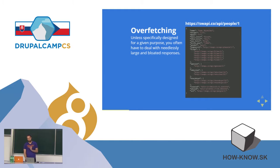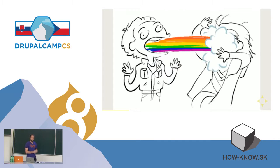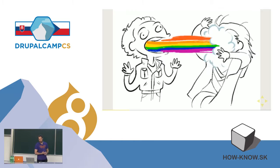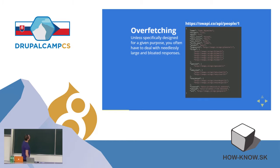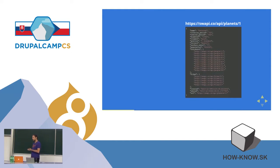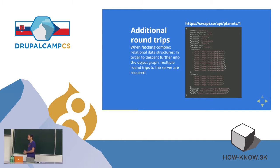We were only interested in a few fields on that request but we're getting all of this information back — the server is puking data all over us. And because the data is hierarchical, we don't get the information we wanted: the names of the films, the names of the planets. Instead we get references to additional resources which we then have to fetch separately, producing additional round trips to the server.